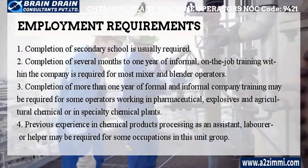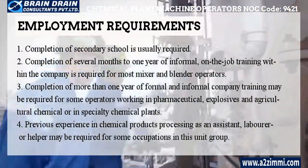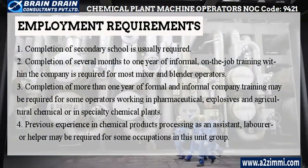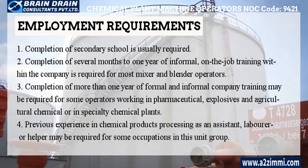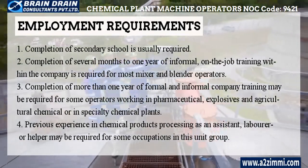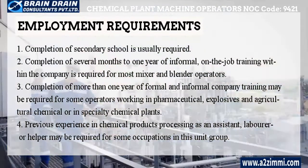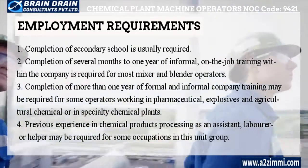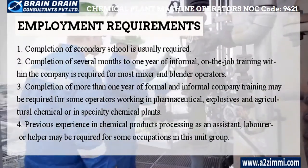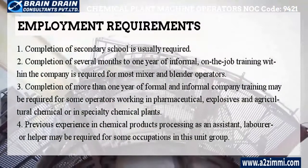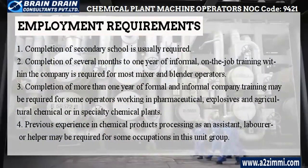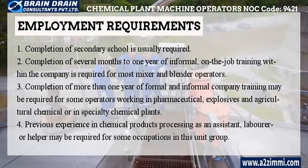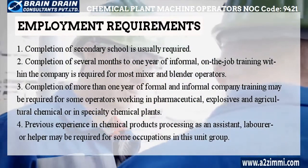Completion of secondary school is usually required. Completion of several months to one year of informal on-the-job training within the company is required for most mixer and blender operators. Completion of more than one year of formal and informal company training may be required for some operators working in pharmaceutical, explosives, agricultural chemical, or specialty chemical plants. Previous experience in chemical products processing as an assistant, laborer or helper may be required for some occupations in this unit group.